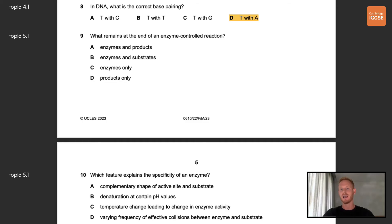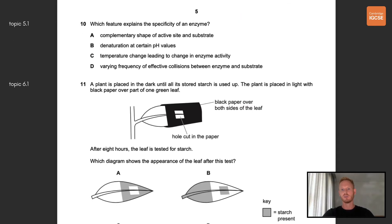Number nine, what remains at the end of an enzyme controlled reaction? The correct answer here is A, enzymes and products. A substrate binds to an enzyme, the enzyme mediates a reaction and products are released. Number 10, which feature explains the specificity of an enzyme? Specificity refers to the fact that each enzyme only binds to one particular substrate. This is because the shape of the active site of the enzyme and the shape of the substrate are complementary.